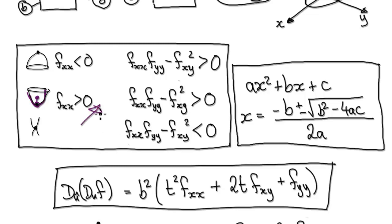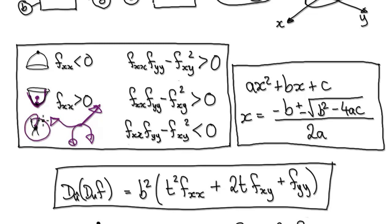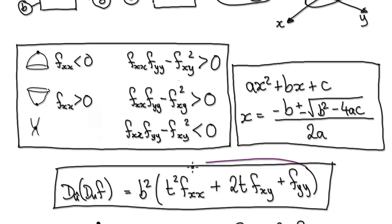If the concavity changes — one minute it concaves up, the next it concaves down — then you know you're at a saddle point. So by looking at this, we can see what's going on.